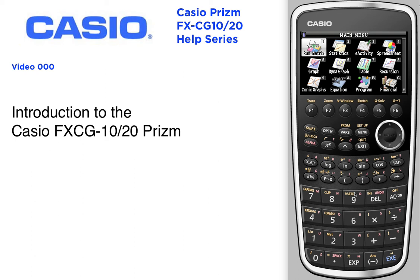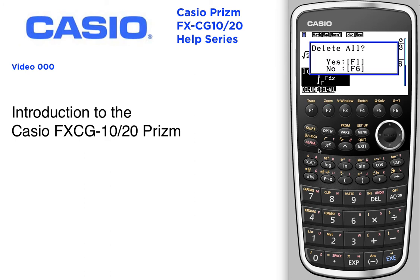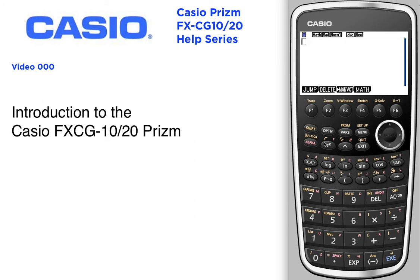Right now I'm in the main menu. I'll press execute to go into Run Matrix. The Run Matrix has natural display, which means everything looks the way it should in the calculator.